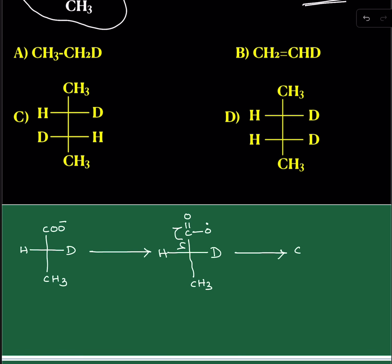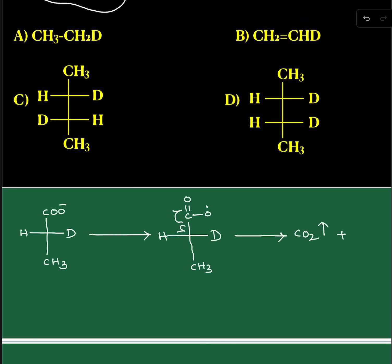Next, it undergoes homolytic cleavage. Due to homolytic cleavage, CO2 gas will be released. And the remaining species will be converted to an alkyl radical. If you see, this will have only three groups: deuterium, methyl, and hydrogen.